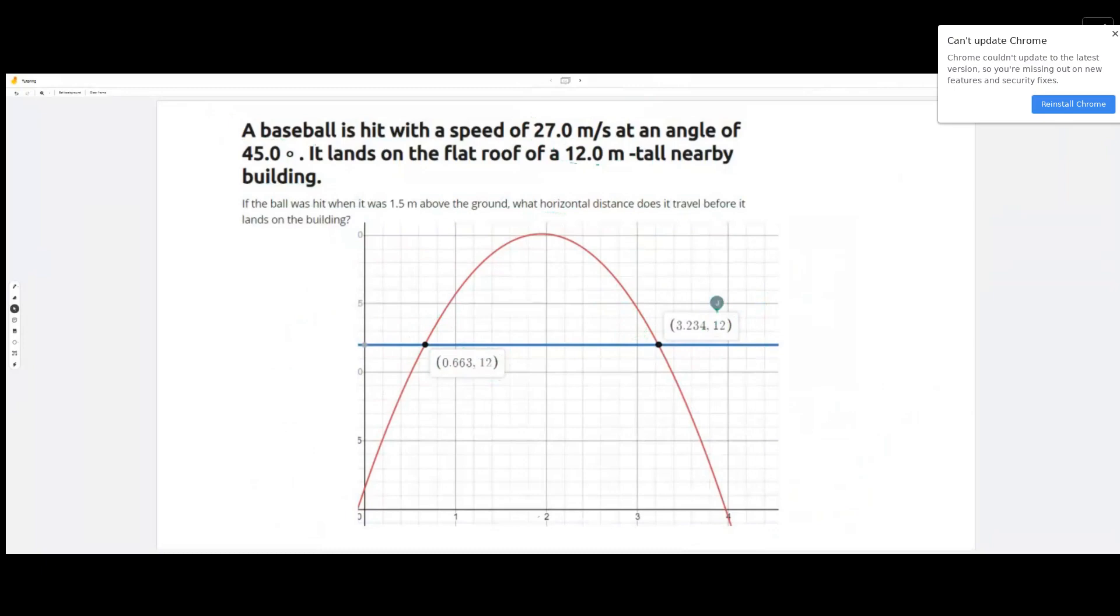So the time value that we are going to use is 3.234 seconds. If we know it takes 3.2 seconds for it to land on this building, then we now know how long it was in the air before it landed on the building. So now we have this time value that we were looking for originally to plug into the x equation.